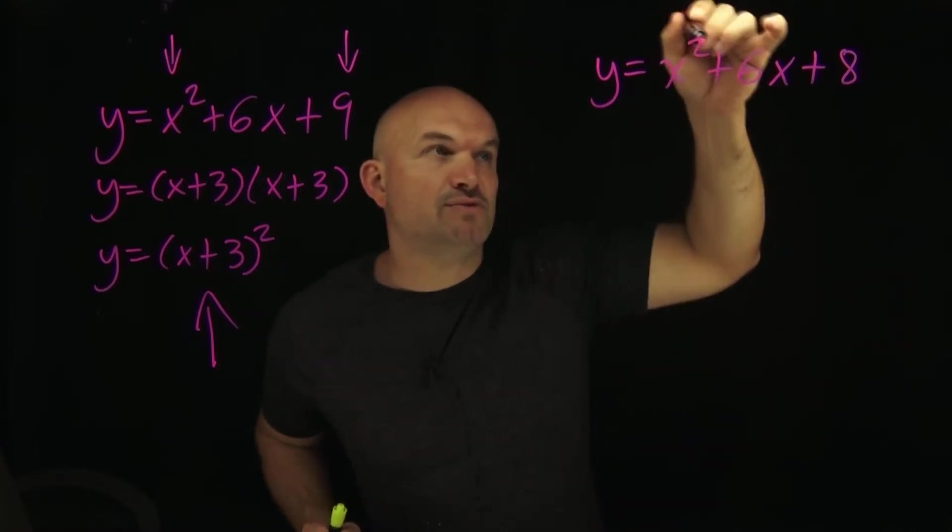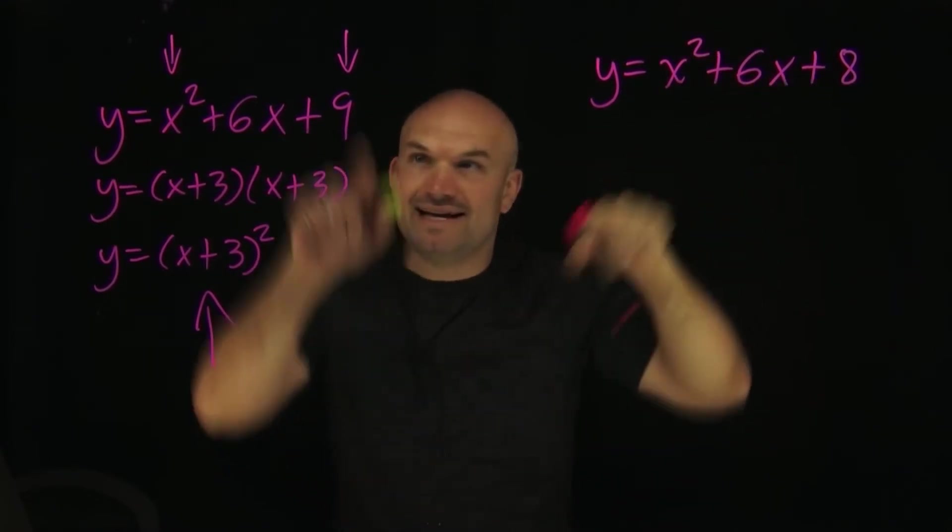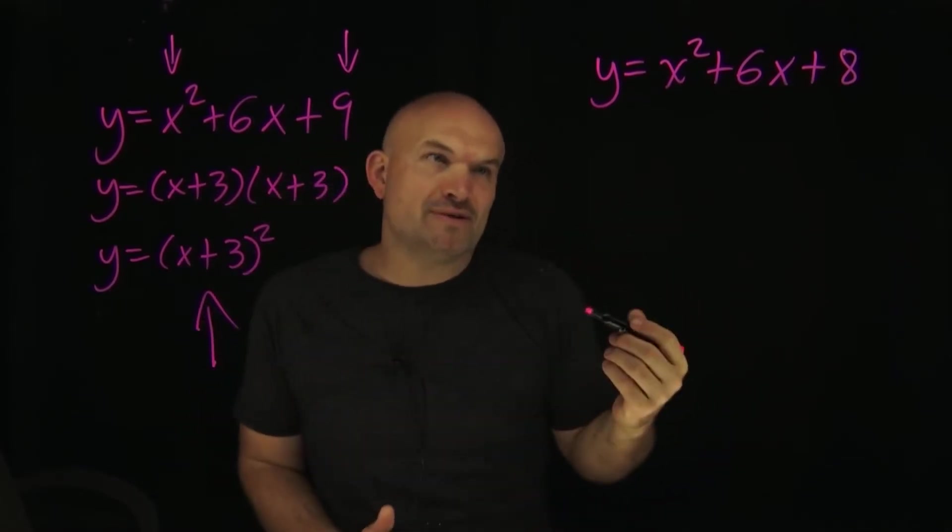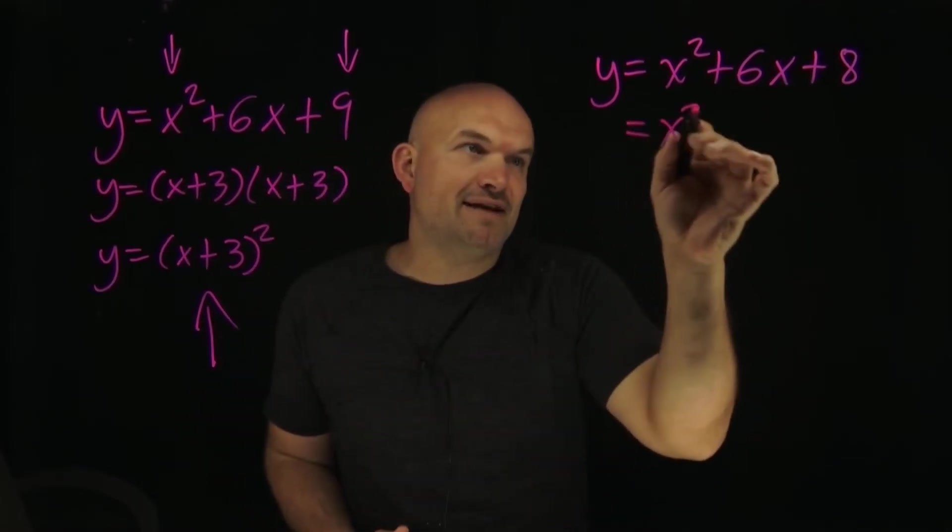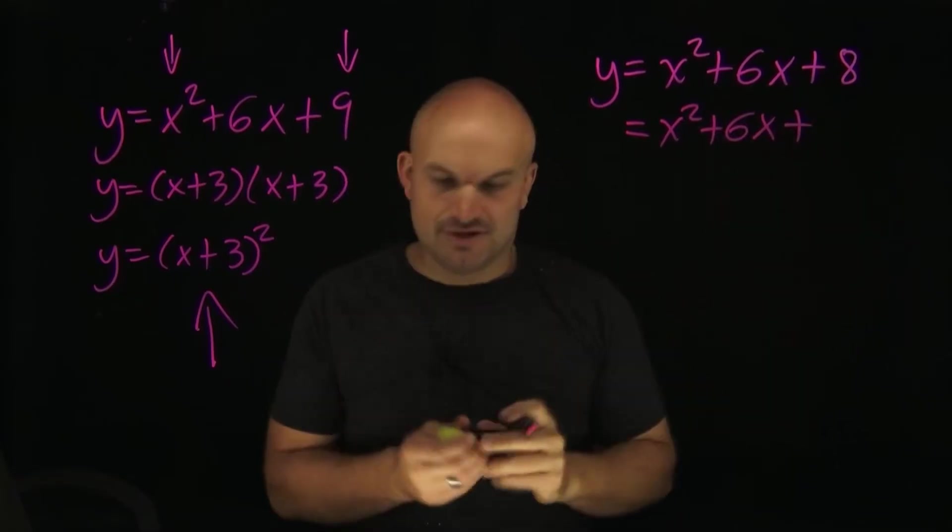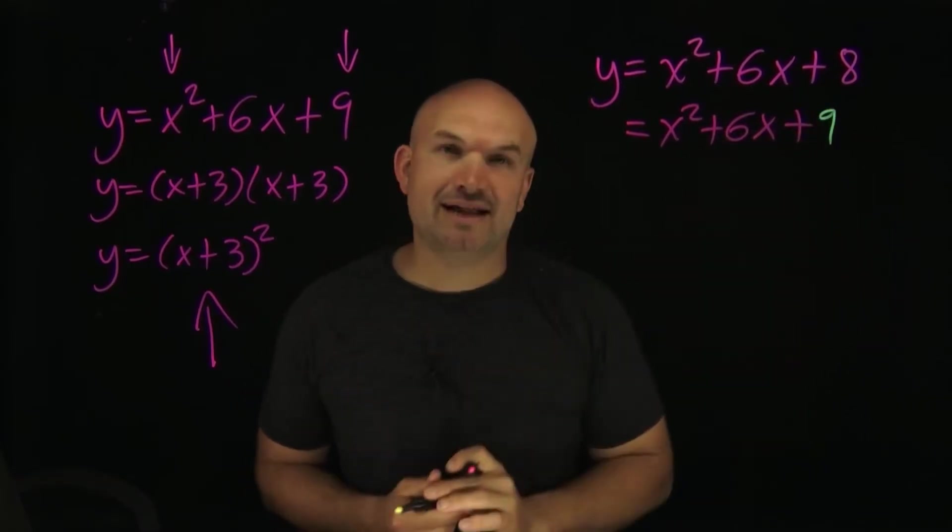Well obviously I already have an x² and a 6x, I just need that 9. I don't want the 8, I just need that 9. So one thing you could do is just say, well all right, why don't we just add the 9 then? Let's just go ahead and add the 9.